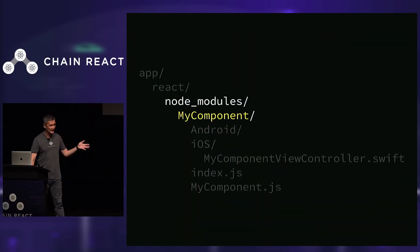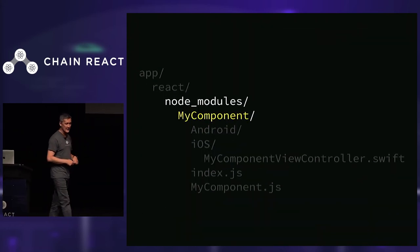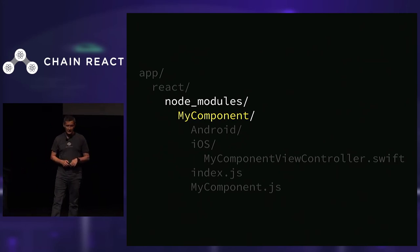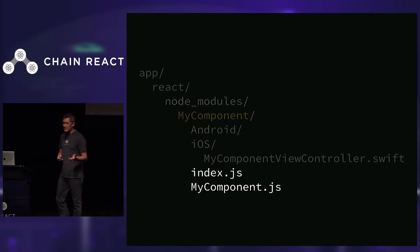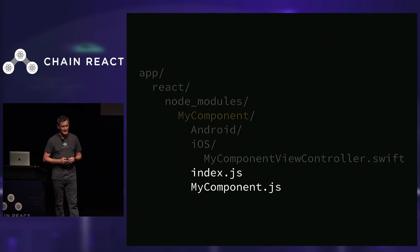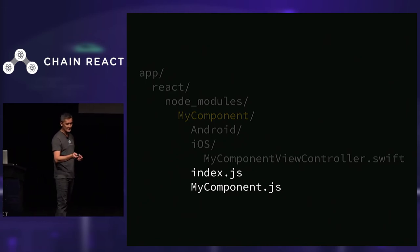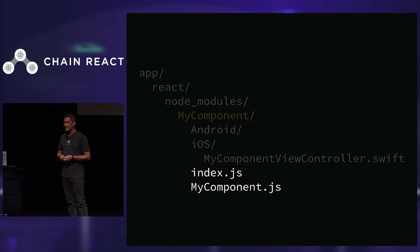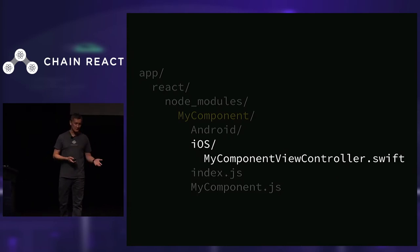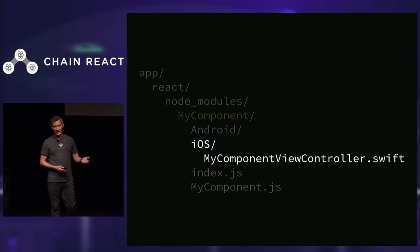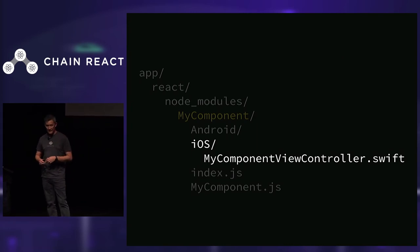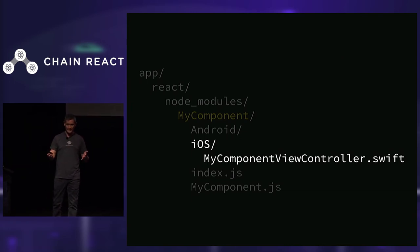This is generally how we lay out a component that has a native wrapper around it. At the root of the module folder, you'll find the JavaScript implementation for your component and an index.js so it can be imported. You'll also see platform-specific folders — an Android folder and an iOS folder — and in these folders there's one wrapper that allows the component to be used inside native.